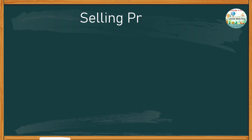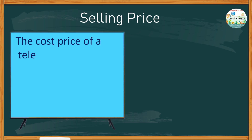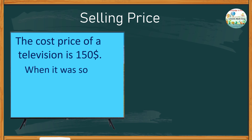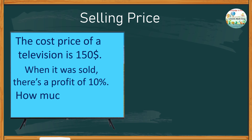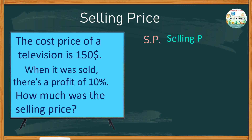To clearly understand how to find the selling price, let's try to answer a simple word problem. The cost price of a television is 150 dollars. When it was sold, there is a profit of 10%. How much was the selling price? There are many different ways to find the selling price.